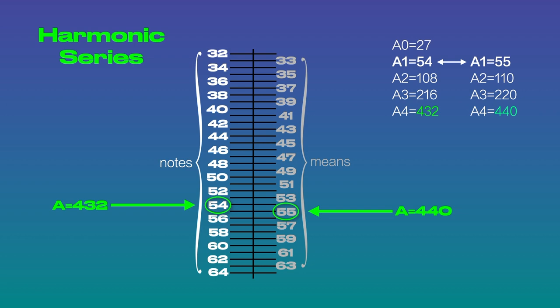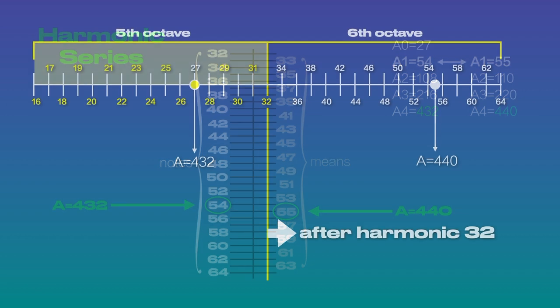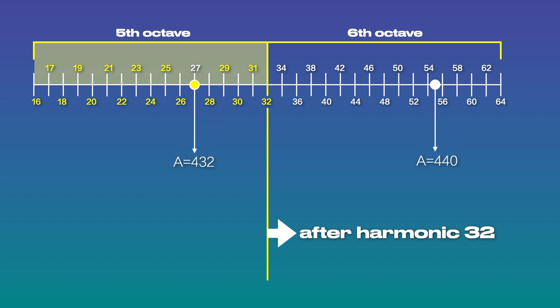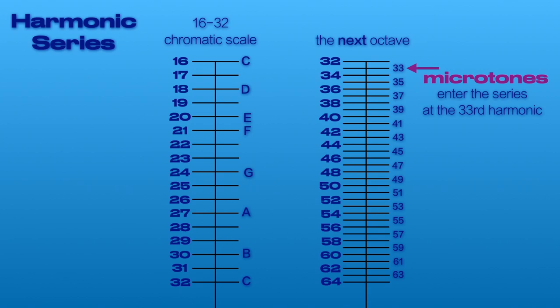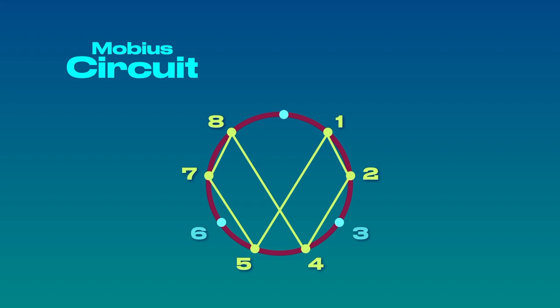This is due to the fact that A432 is generated before harmonic 32 and A440 is generated after harmonic 32. So why do notes end after the 32nd harmonic? It's all about the power of 3 and the number 9 — the apex value of the Mobius circuit.